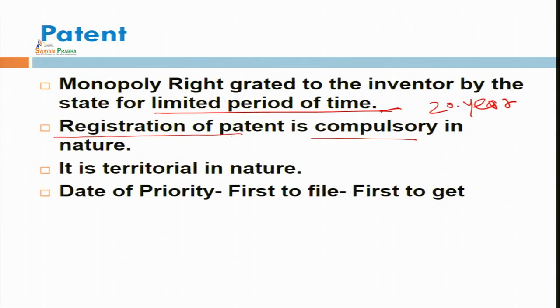Although there are other species of intellectual property rights for which registration is not compulsory — for example, in copyright and trademark, registration is not compulsory, they are optional in nature. However, it is advisable that you should go for registration of patent as well as copyright and trademark. Under the Indian Patent Act 1970, registration of patent is mandatory. We can also say this registration is territorial in nature.